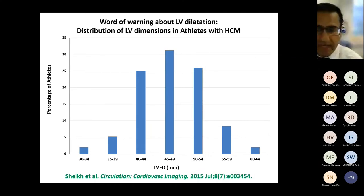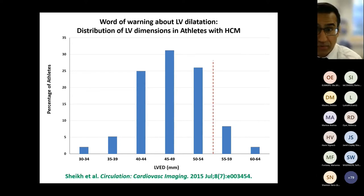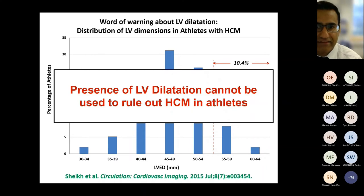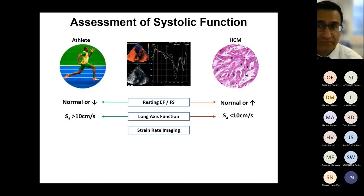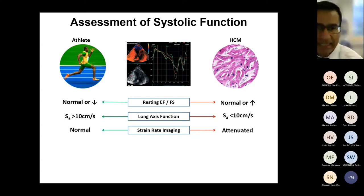A word of warning regarding LV cavity: in HCM the LVH typically occurs at the expense of the LV cavity, so the cavity is usually normal or reduced. However, data I published during my PhD in 2015, looking at about 100 athletes with HCM on our database assessed at the time they were actively exercising, found that athletes with HCM do exhibit a degree of LV dilatation due to physiological remodelling. Therefore LV cavity dilatation cannot itself be used to rule out HCM in athletes. LV systolic function, particularly strain rate imaging, is invariably normal or supranormal in an athlete but may be reduced or attenuated in HCM, and can be a very early marker of disease before gross structural changes have occurred.